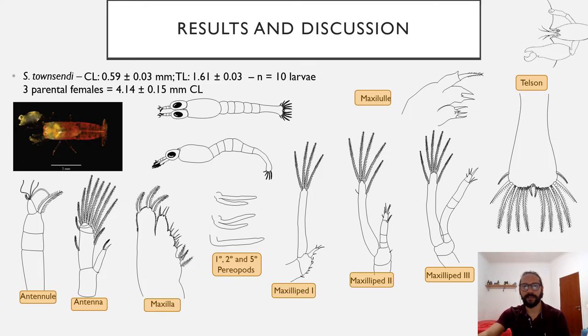The appendages described were: antenna, antennule, maxilla, three pairs of pereopods, three pairs of maxillipeds, maxillule, and telson.